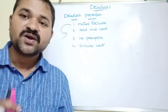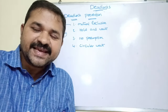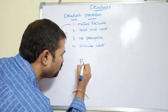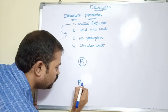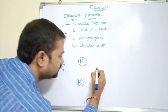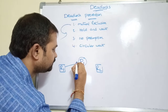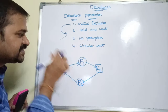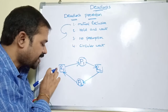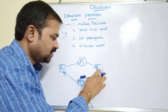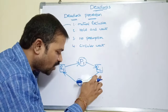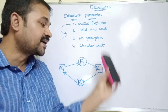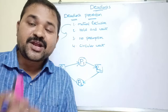Now let's see the next condition: hold and wait. A process is holding some resources and is waiting for other resources. For example, with two processes P1 and P2 and two resources R1 and R2 — P1 is holding R1 and waiting for R2, while P2 is holding R2 and waiting for R1. This situation is called hold and wait, and if it occurs, there is a possibility that deadlock may occur.